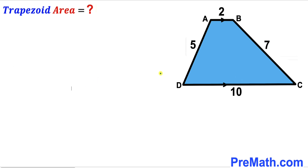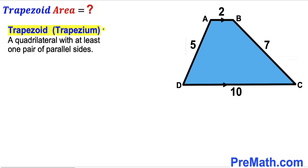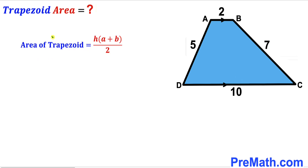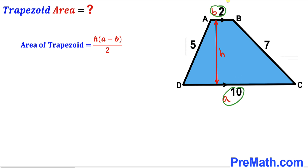Let's get started. Since we are interested in calculating the area of the trapezoid, let's recall the definition: a trapezoid, sometimes called a trapezium, is a quadrilateral with at least one pair of parallel sides. Now let's recall the area formula: Area equals height h times the bases (a plus b) all over 2. In our case, base a is 10 and base b is 2.